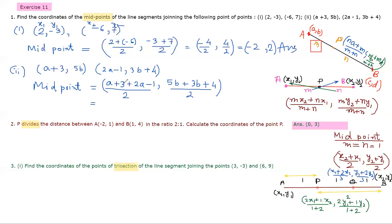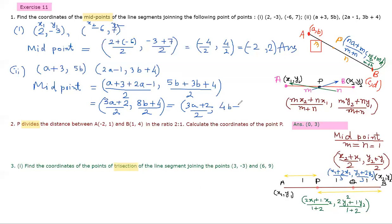Simplifying: 2a plus a is 3a, and 3 minus 1 is +2, so the abscissa becomes (3a+2)/2. For the ordinate: 5b plus 3b is 8b, plus 4, so it becomes (8b+4)/2. And the final simplified form is (3b+2)/2. And now we calculate the coordinates of point P.